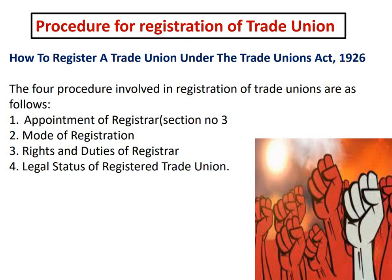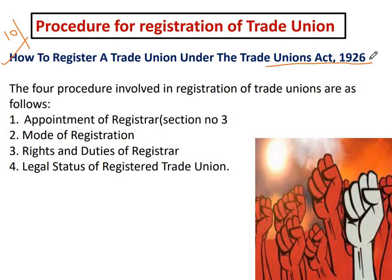अब procedure क्या है — process क्या है for registration of trade union? यह खुद में एक question है जो full 10 या 15 marks में आता है — what do you mean by trade union and what is the registration procedure? तो how to register a trade union under the Trade Union Act 1926 — इसको four parts में divide किया गया है। The four procedures involved in registration of trade union are as follows।